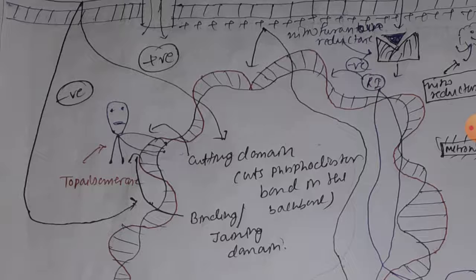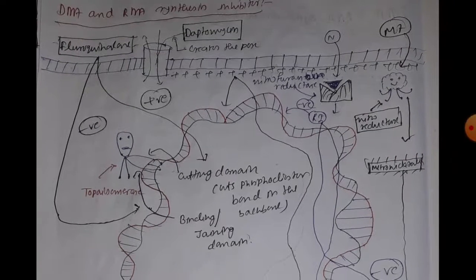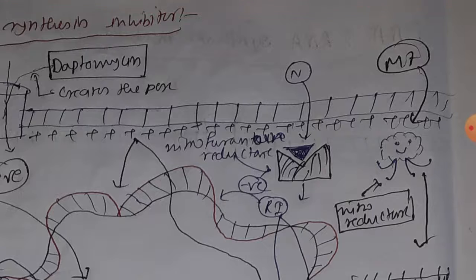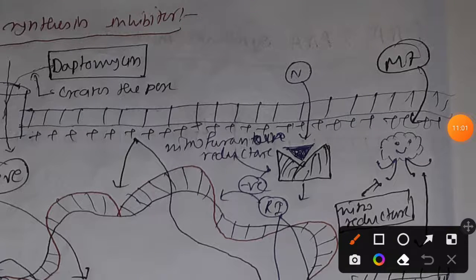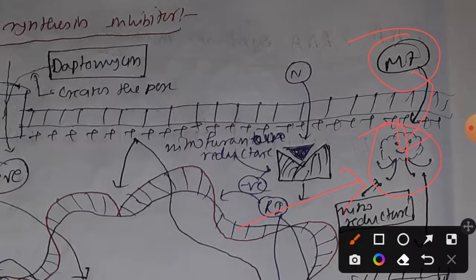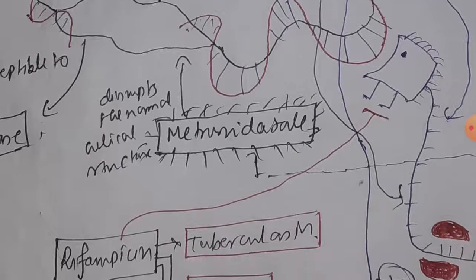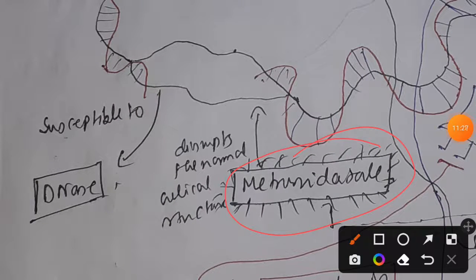Now let's move to another drug: metronidazole. Metronidazole first interacts with nitroreductase, an enzyme already present inside the cell. This nitroreductase converts metronidazole into an active metabolite. This active metabolite causes disruption of the normal double-helical structure of DNA, which then facilitates DNA fragmentation via DNase.